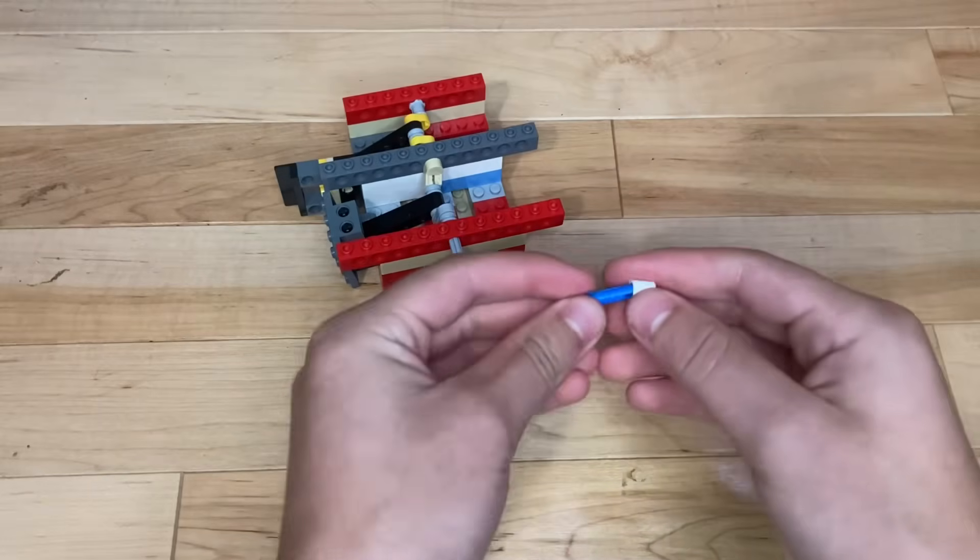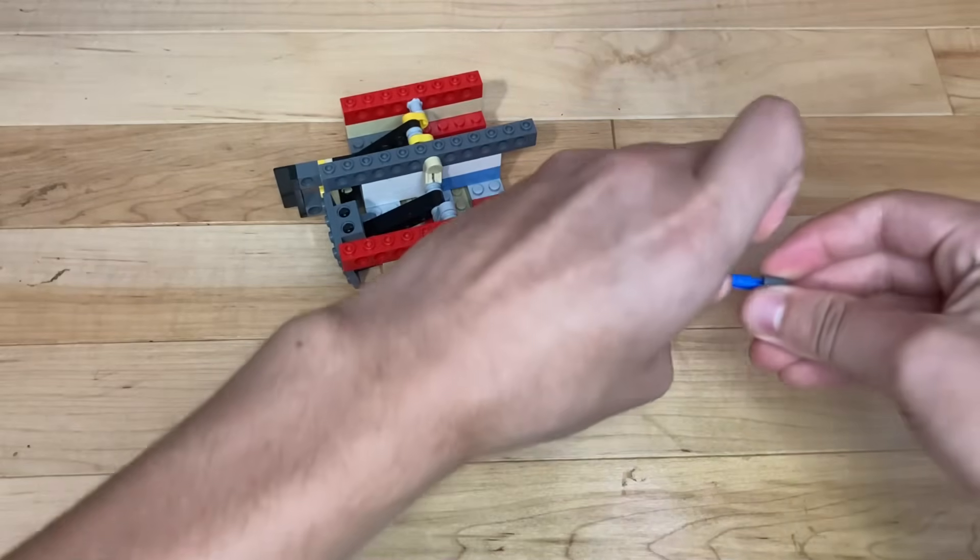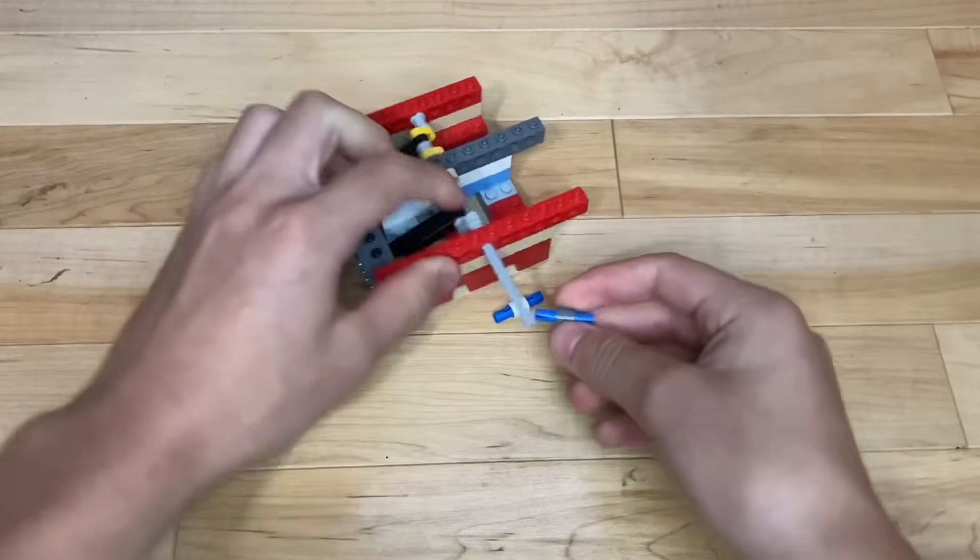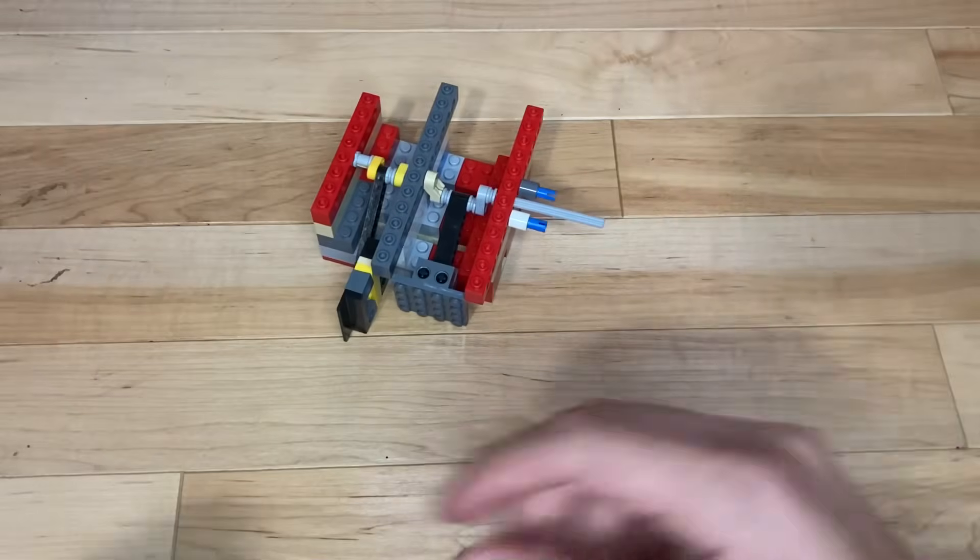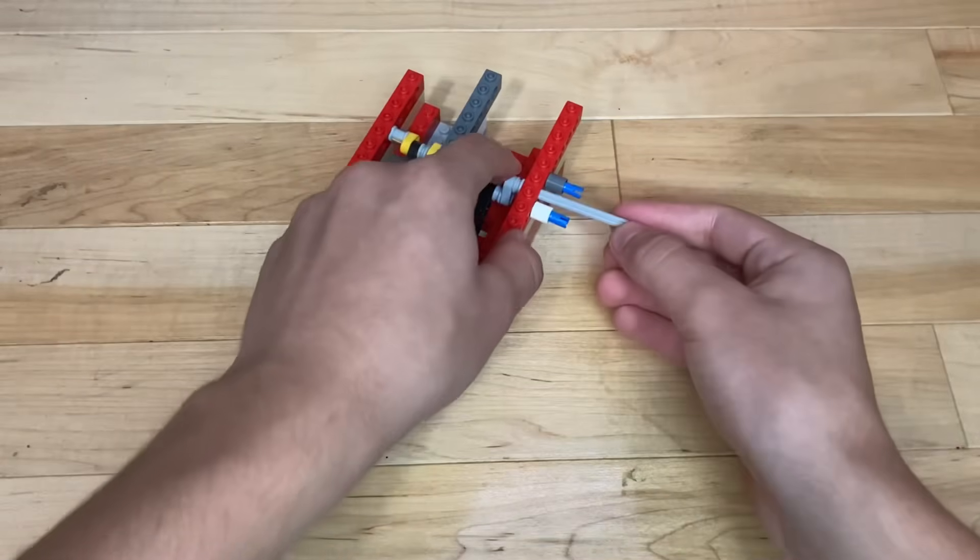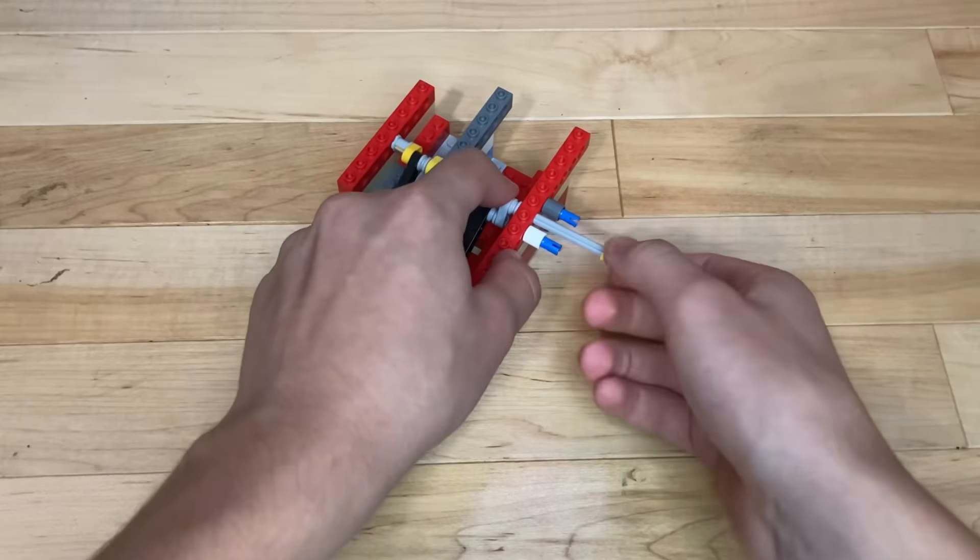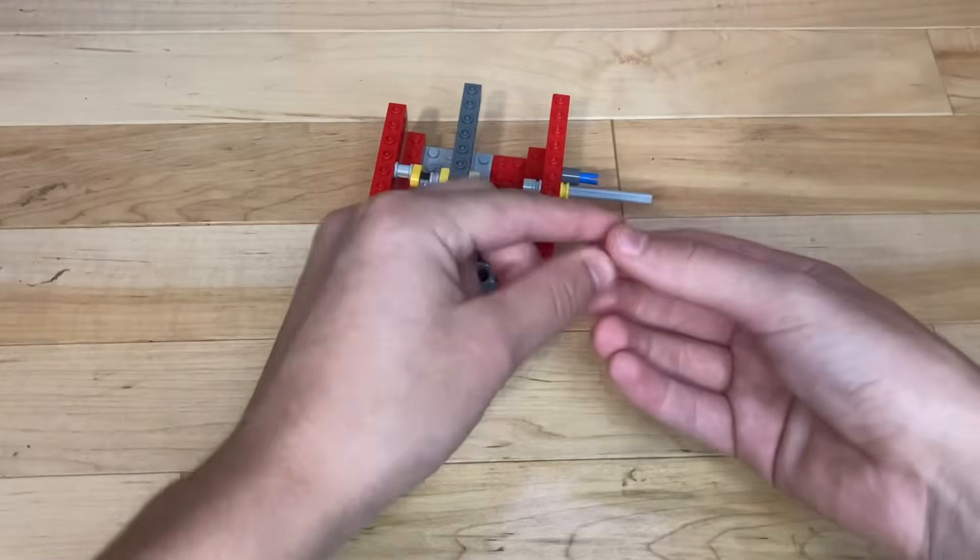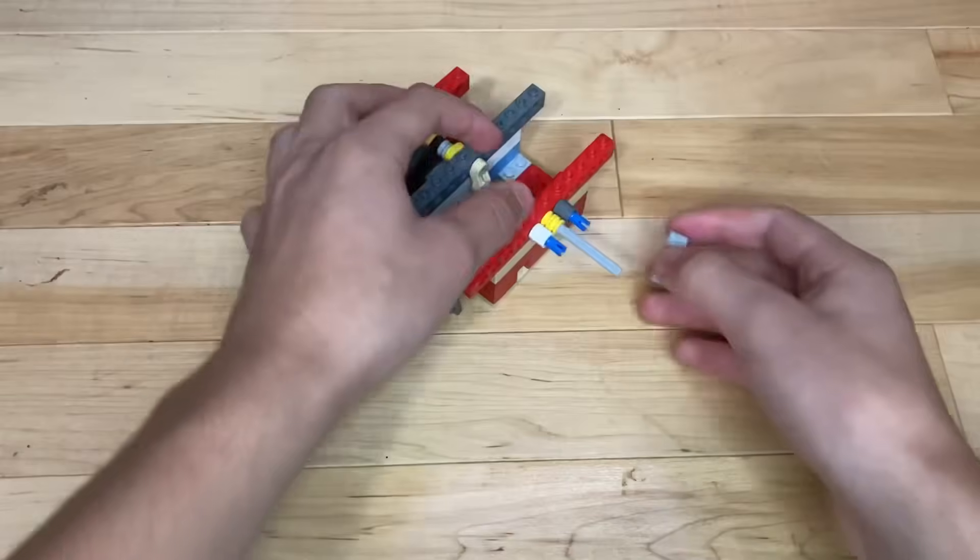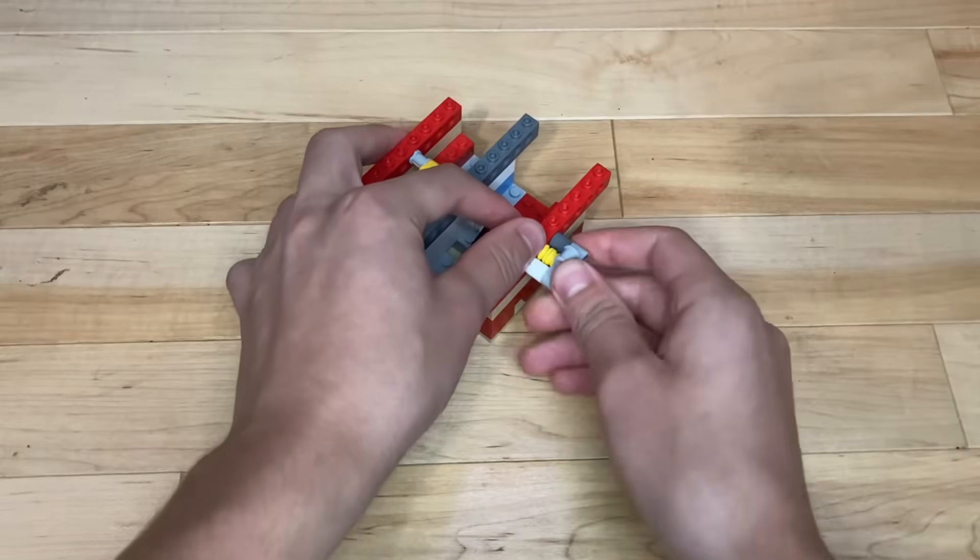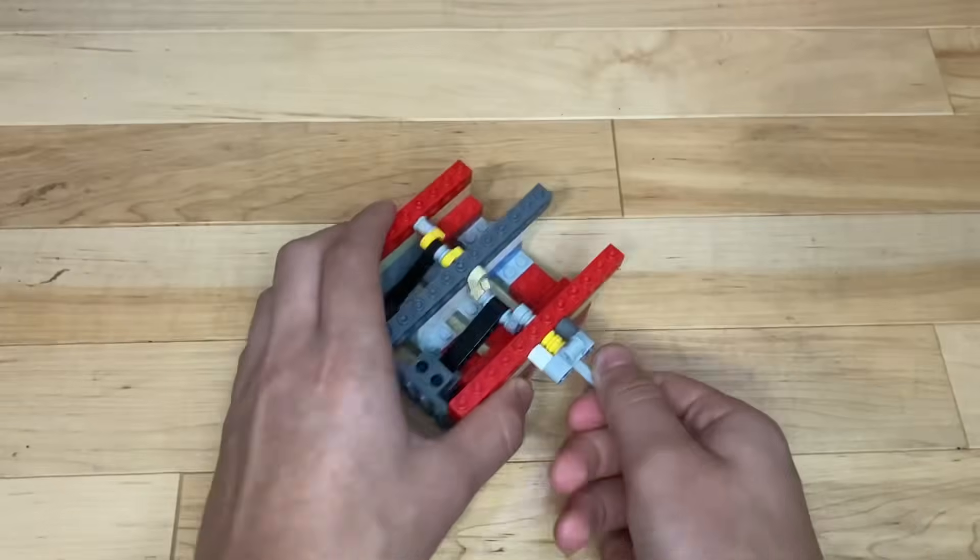Take two of these blue connector pins, put these bushings here, and simply apply them right here. Take two more half-stub bushings. Put them right on the axle. And then take this. Throw it on right there. Now the axle will be very hard to take out.